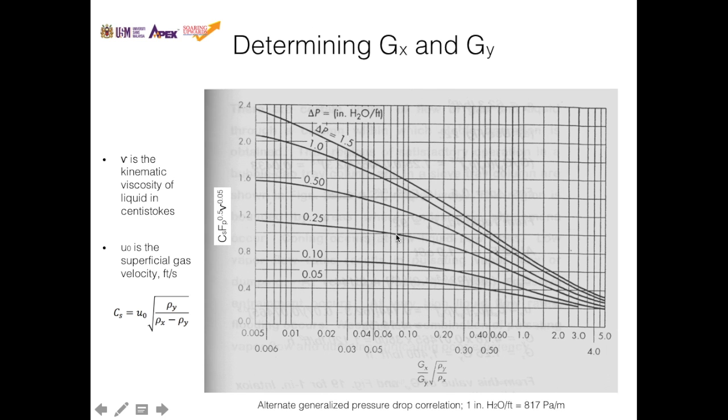We also need to use this figure to determine GX and GY. Here it shows the relationship between GX. Now GX, like before, is the solvent flow rate, and Cs is defined by this equation. Again, ρy and ρx are constants, so you don't have to worry about this too much.